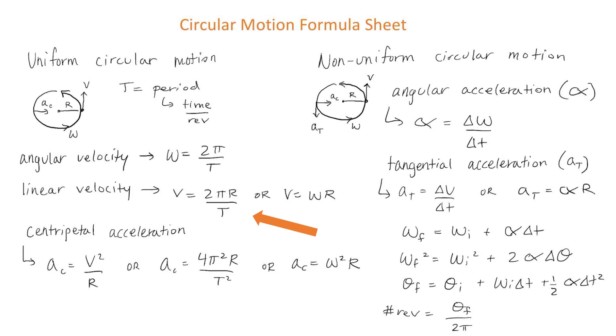The object will also have a linear velocity. In this case, v equals 2 pi r divided by t, where r is the radius of the circle. Or you can say that the linear velocity v is equal to omega times r. Linear velocity has the units of meters per second.